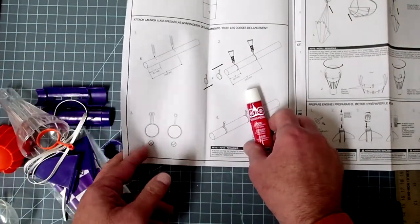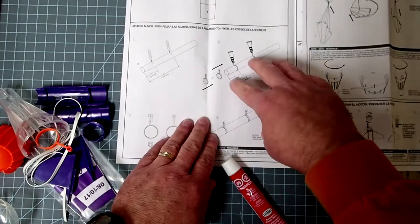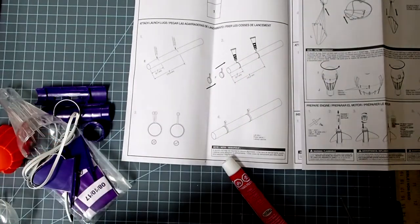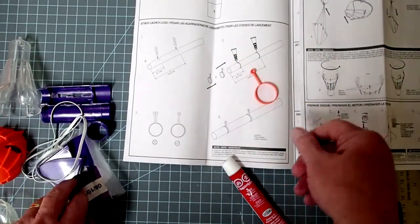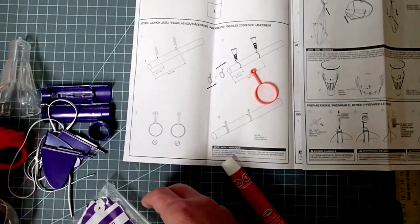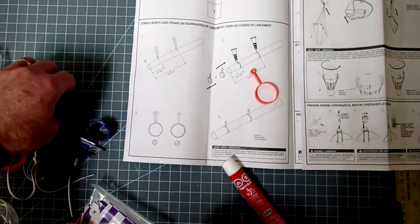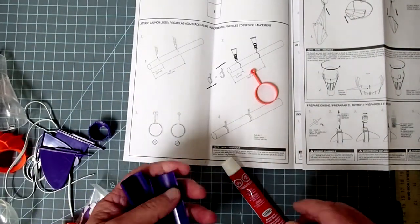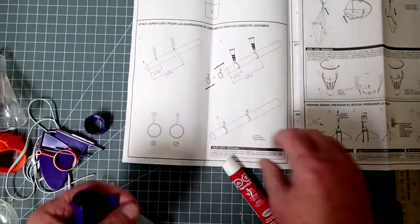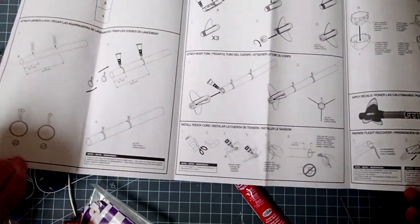Okay, so the first thing they have us do here is to attach the launch lug assemblies. And these look like this guy here. But what I am actually going to do first is I'm going to set that aside and we move ahead here.